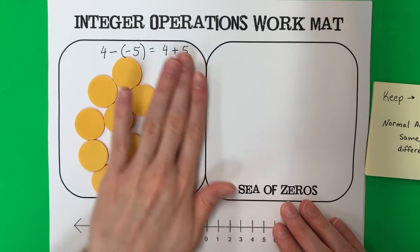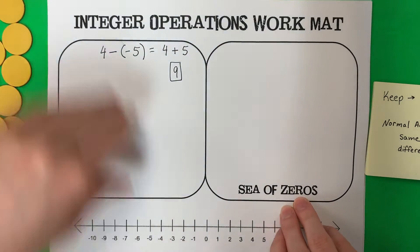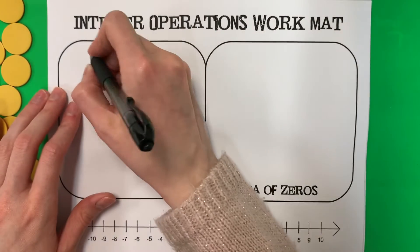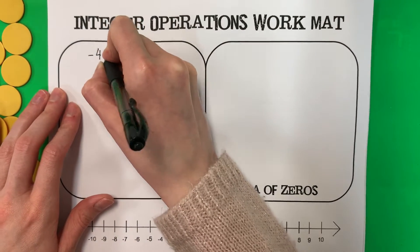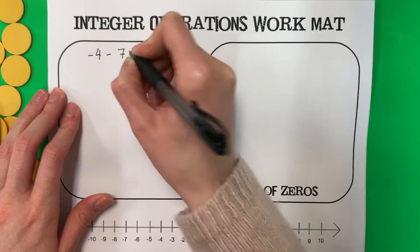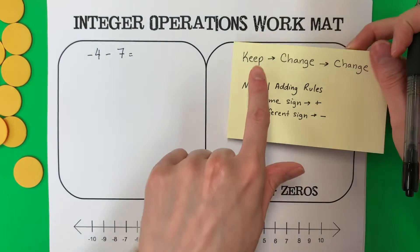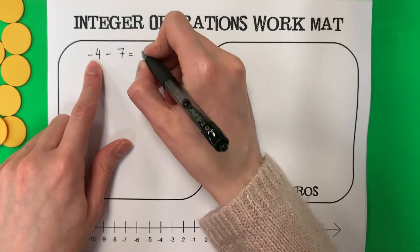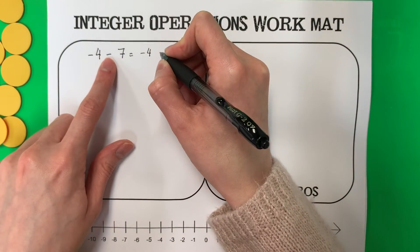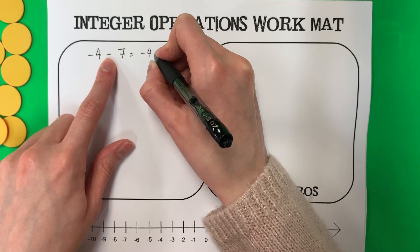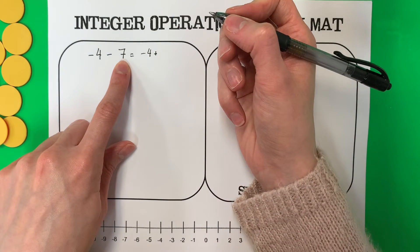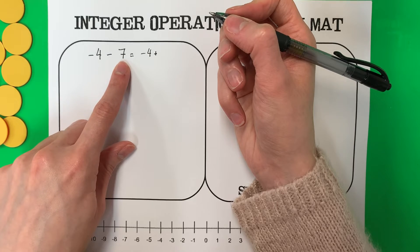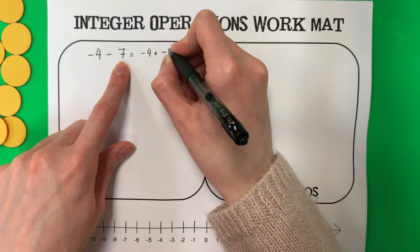Our next example is negative 4 minus 7. We are going to do keep, change, change. Keep negative 4 the same. Change: the opposite of minus is plus. Change: this is positive 7, so the opposite of positive is negative. So it becomes negative 4 plus negative 7.